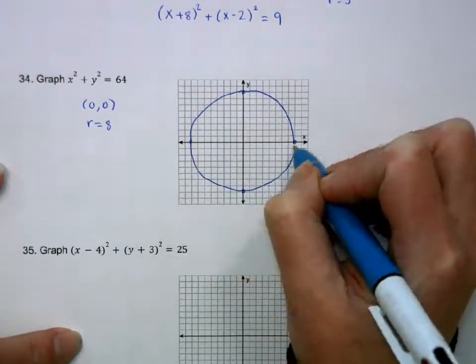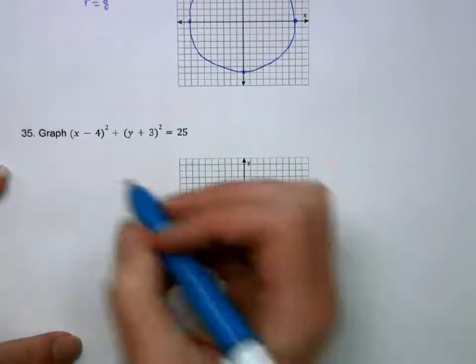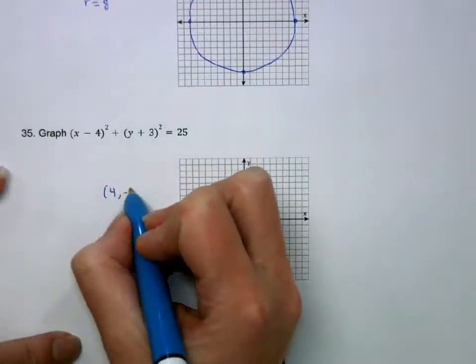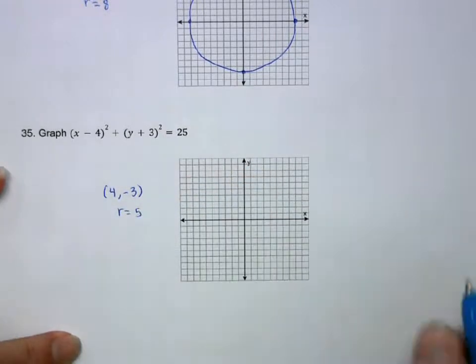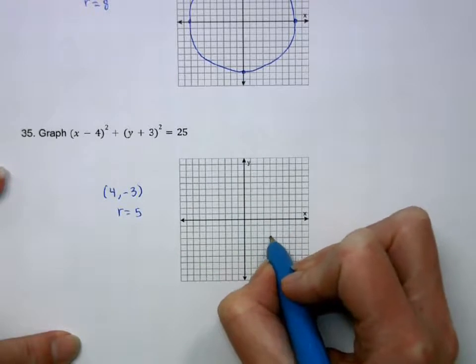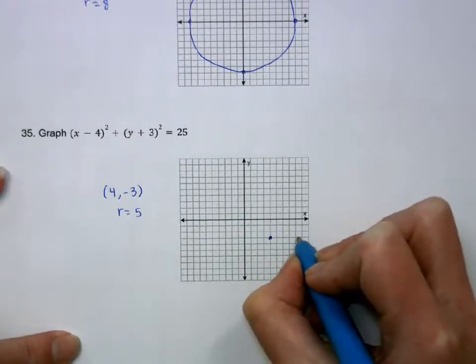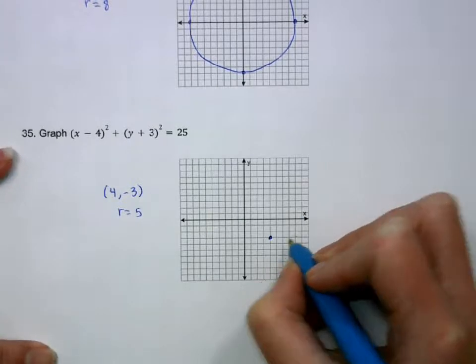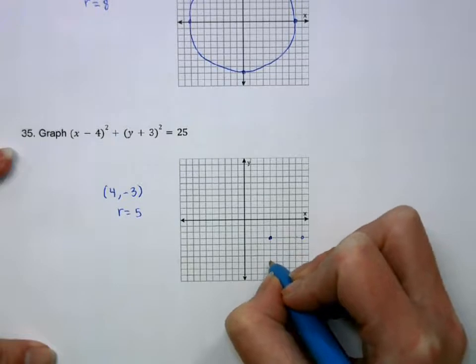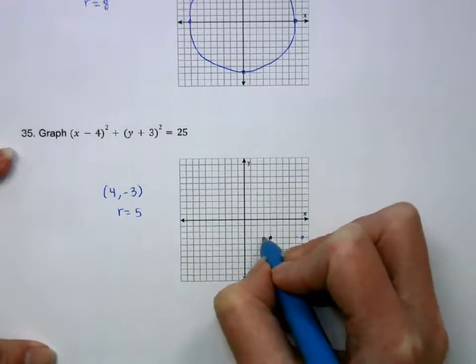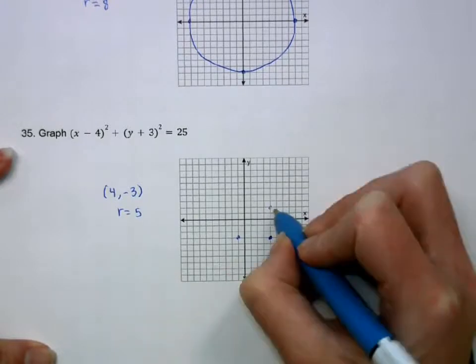And this one, our center is going to be at positive 4, negative 3. And the radius is going to be 5. So I'm going to go over 4, down 3. And then go in each direction, 5. 1, 2, 3, 4, 5. 1, 2, 3, 4, 5. And then again, do our best to complete the circle.